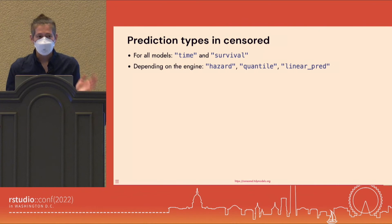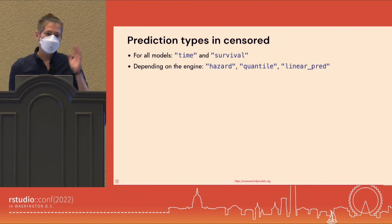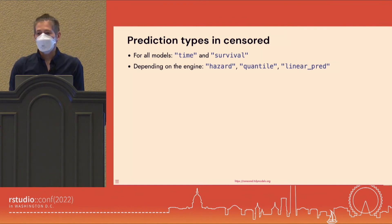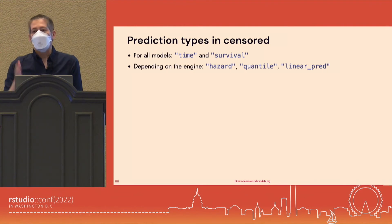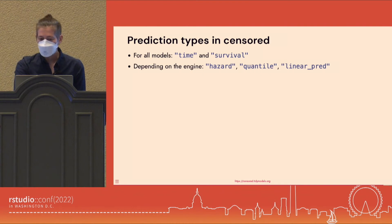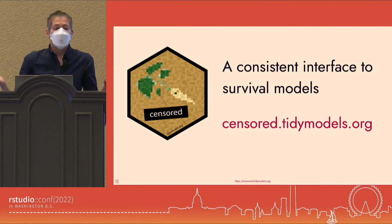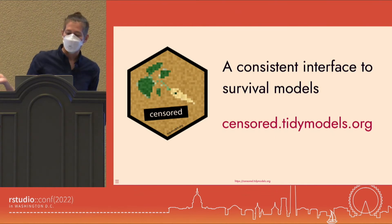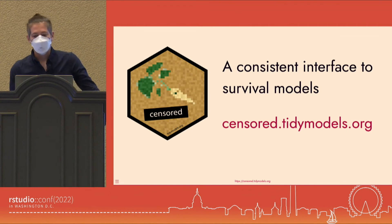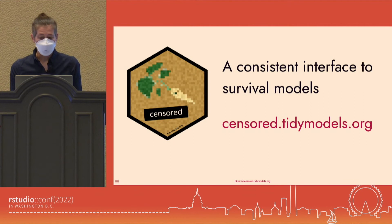You don't have to do any data prep for a matrix interface, you don't have to pad results when there's a missing value, and you don't have to do the legwork to go from a survival curve to a predicted probability at any given time point. To summarize: censored is a consistent interface for survival models, giving you consistency in how you specify, fit, and predict, and what you get back. Please try it out!